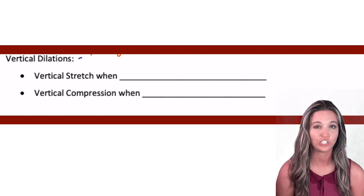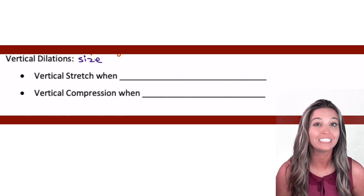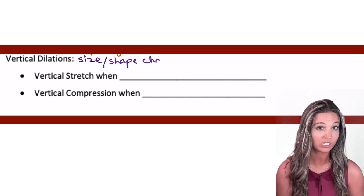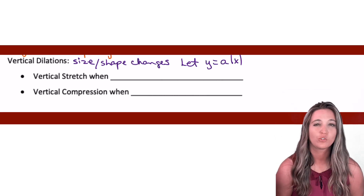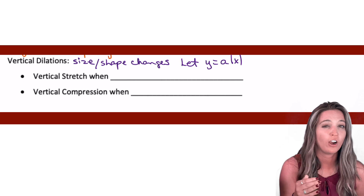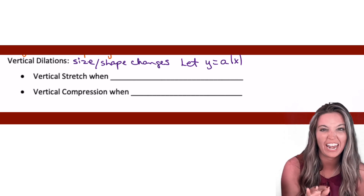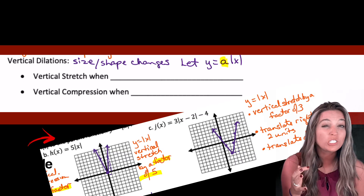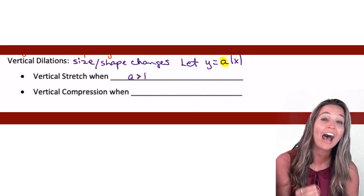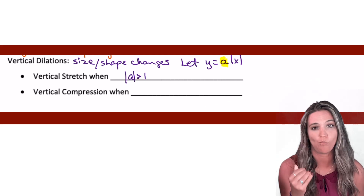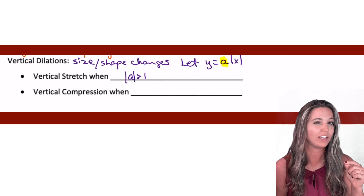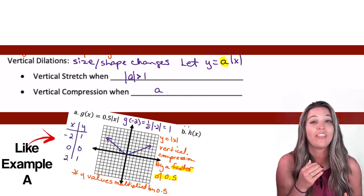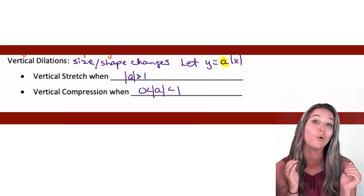Vertical stretches and compressions are examples of vertical dilations, where the size or shape of my graph changes. A vertical stretch is when the number we're multiplying in front of our absolute value bars — let's call that a — has an absolute value greater than one. A vertical compression is when that value is between zero and one.